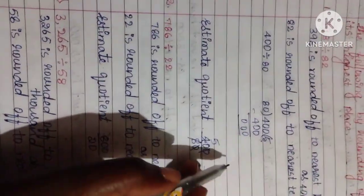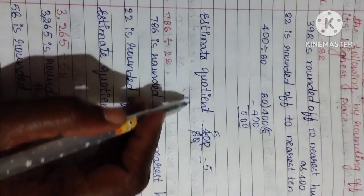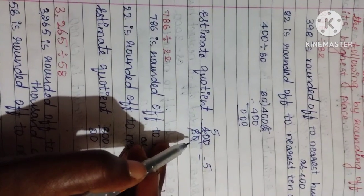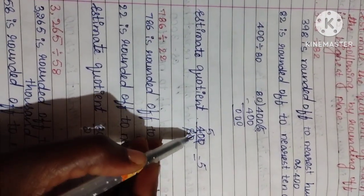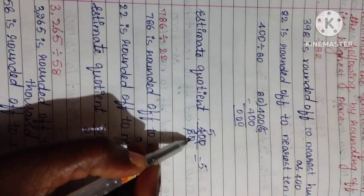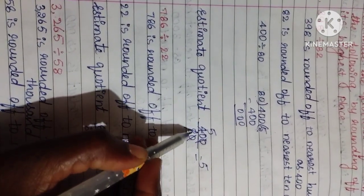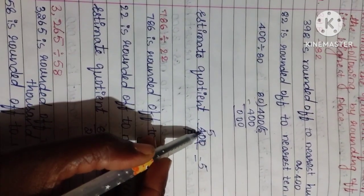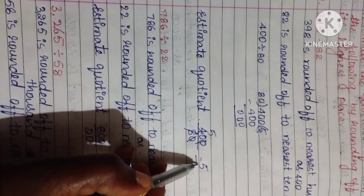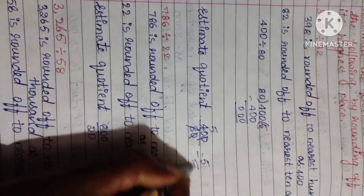And we have answer now 5. And estimate quotient can be done like this also using division: 400 divided by 80. Cancel the zeros. Now 8, 5 is 40. Answer is 5 only, the same answer we will get. Next, second question.